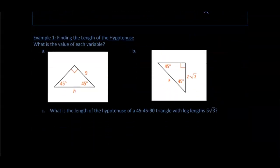Looking at this diagram, we have a 45-45-90 triangle. We can figure out what h is simply by taking our leg and multiplying it by the square root of two. So h equals nine times the square root of two.